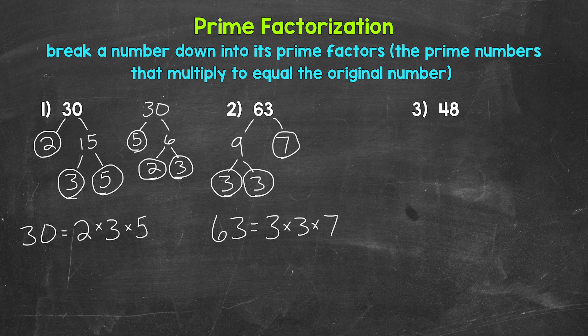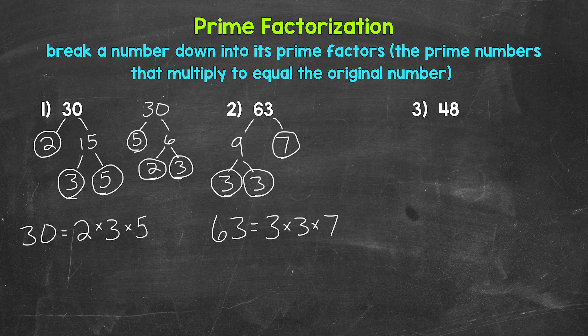Lastly, let's move on to number 3 where we have 48. 48 is an even number, and whenever we have an even number we have a factor of 2 that we can start with — so 2 and 24 would work. But since we started with 2 for number 1, let's try something else here. 4 and 12 are factors of 48 — 4 times 12 equals 48 — so let's start with 4 and 12.